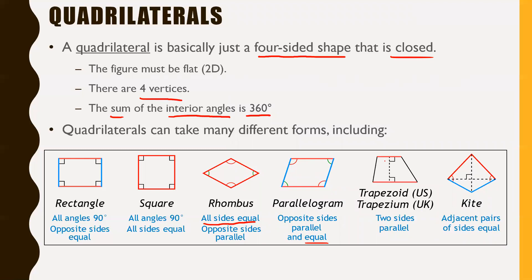Next is a trapezoid. A trapezoid just needs two parallel sides — the parallel sides don't have to be the same length, and the other two sides don't have to be the same length either. It just needs two parallel sides, that's it.